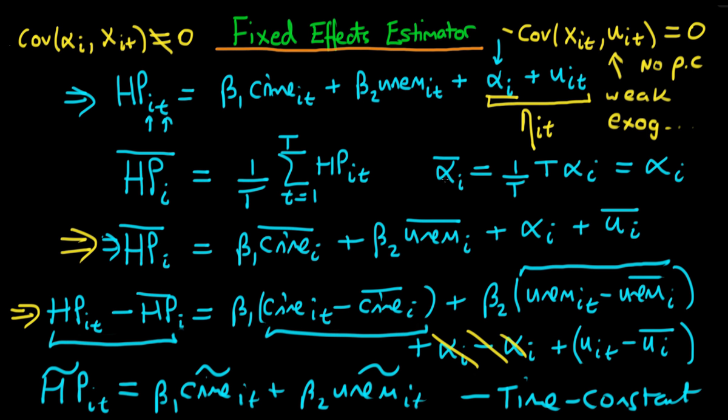So if there were some city specific factors which were not varying over time, we couldn't include them in our fixed effects estimation model. So just like first differences, the fixed effects transformation removes any time constant variables.